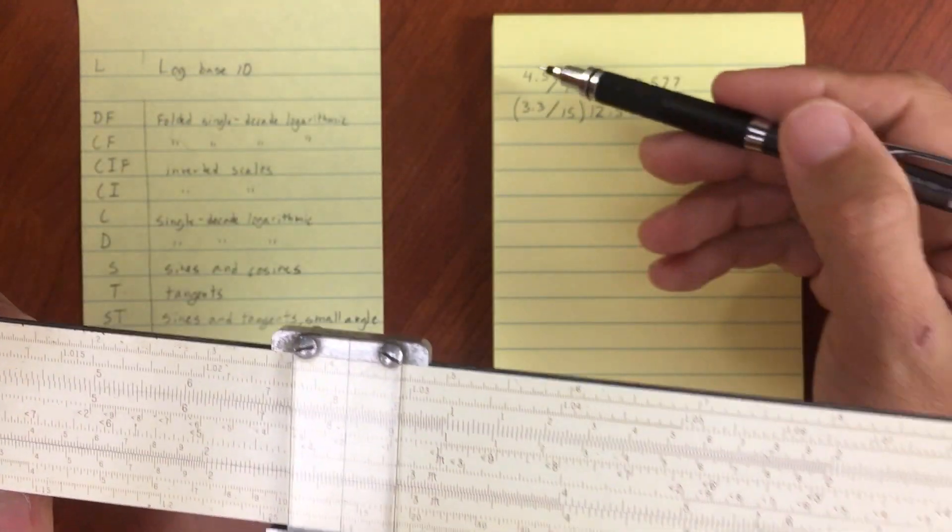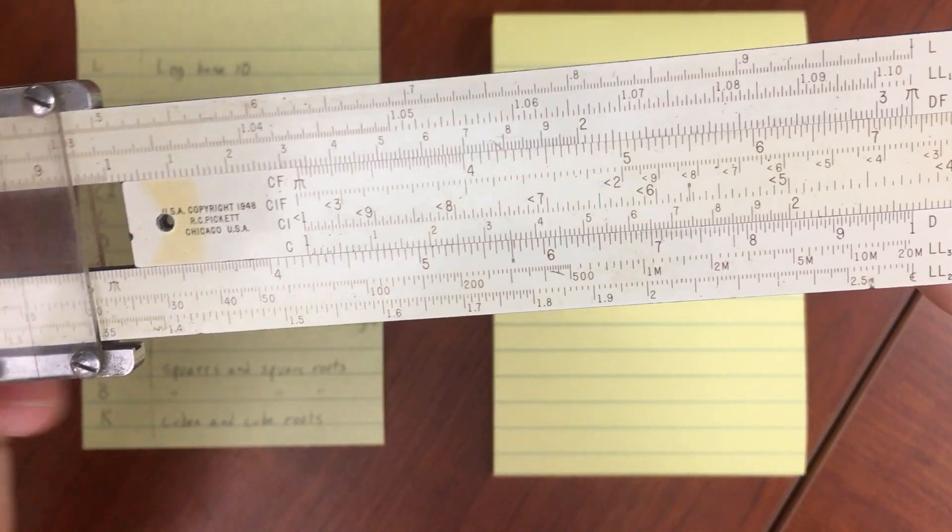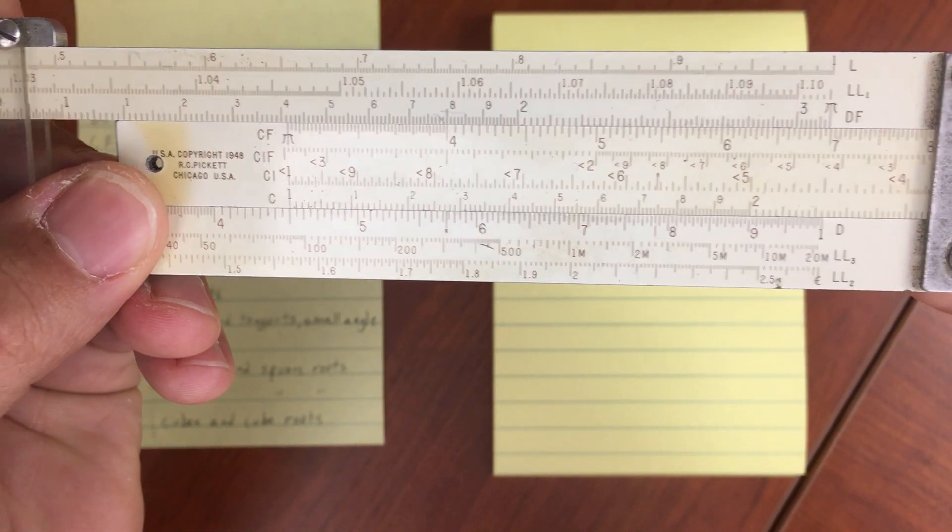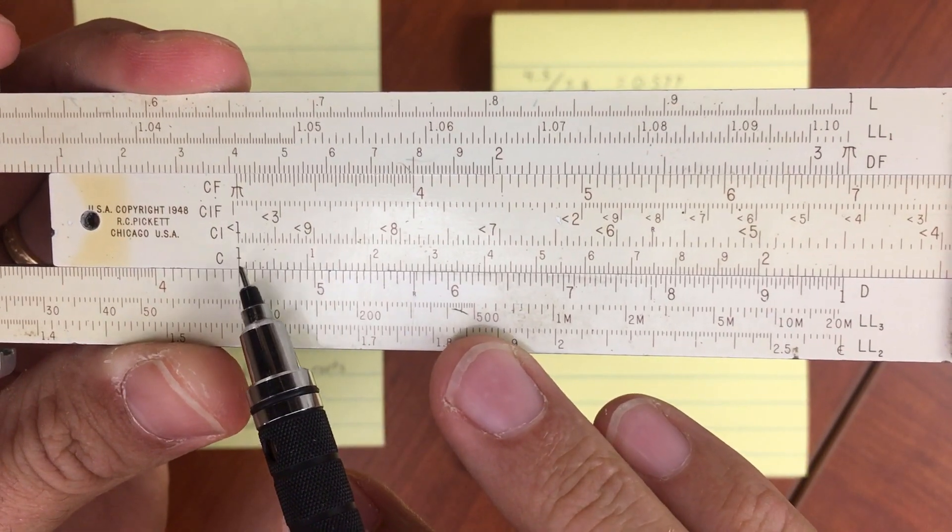So our first number, the numerator, is 4.5. Let's move over to 4.5. Index it right there. Alright, so I've got indexed to 4.5, and I'm going to look at my inverted scale.